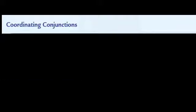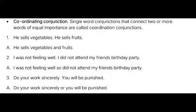Conjunctions are of three types: coordinating conjunctions, subordinating conjunctions, and correlative conjunctions. Conjunctions ke teen prakaar hain — subse pehla coordinating conjunction, subordinating conjunction, aur correlative conjunction. Now, first we are going to study co-ordinating conjunctions.